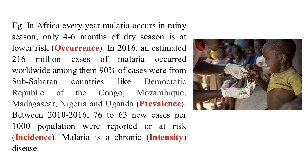Between 2010 to 2016, 76 to 63 new cases per thousand population were reported or at risk. This is incidence. Malaria is a chronic disease — this is its intensity.